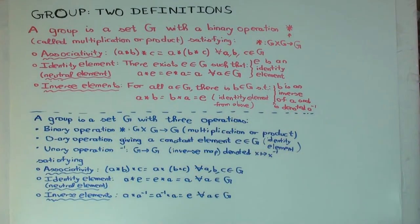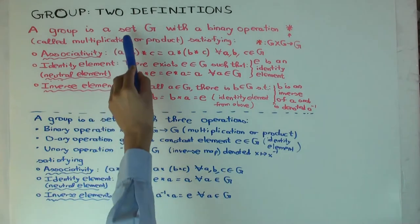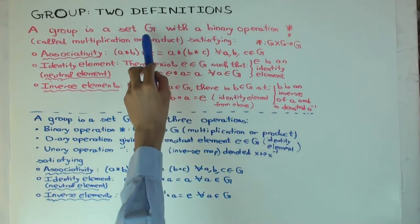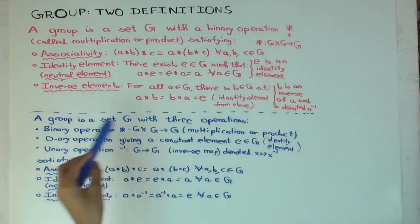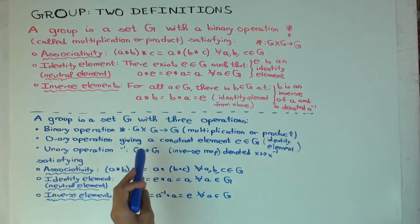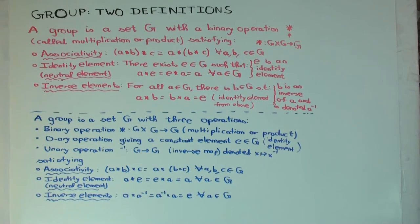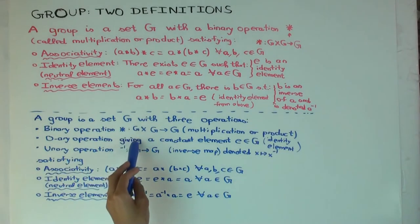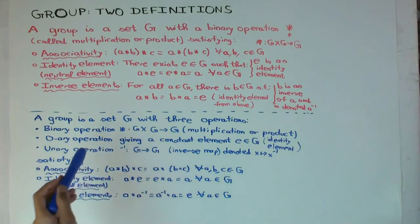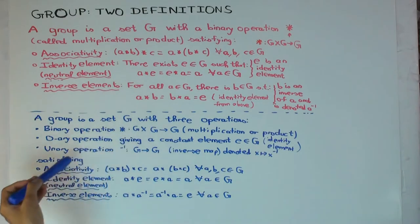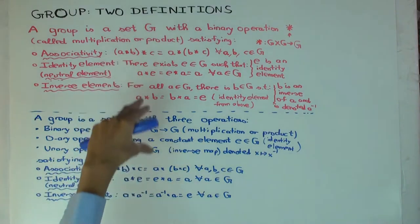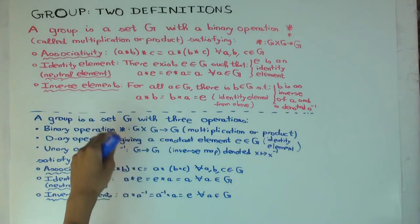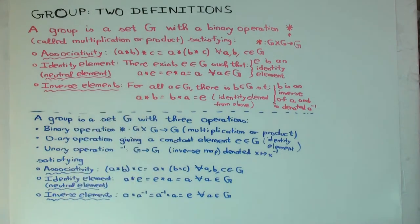With this definition, the group structure includes four things: the set, the binary operation, the zero-ary operation (the identity), and the unary operation (the inverse map). Then I have to check the three conditions. So in this new definition there seems to be more structure — there is more I need to specify to describe a group.